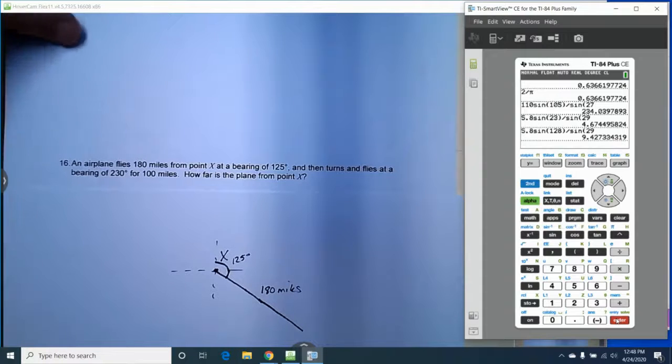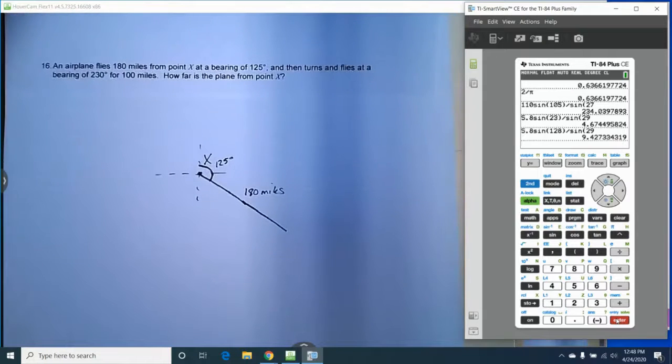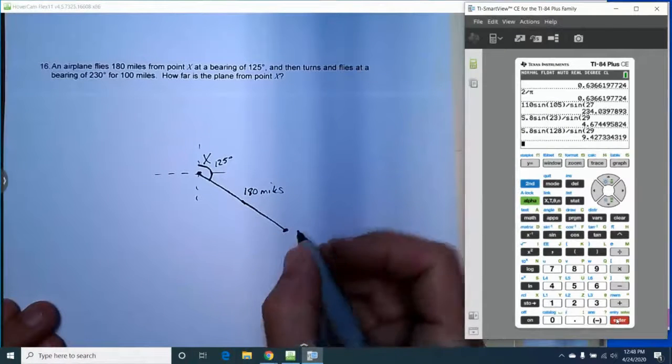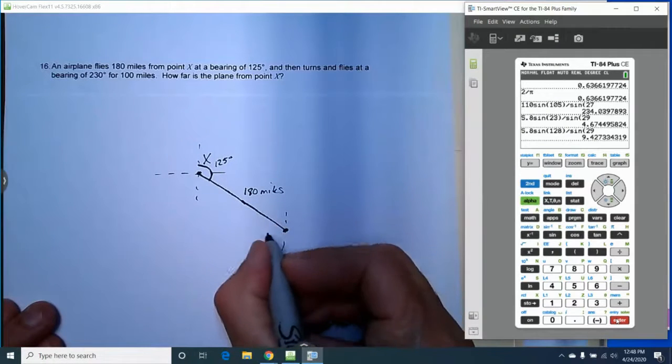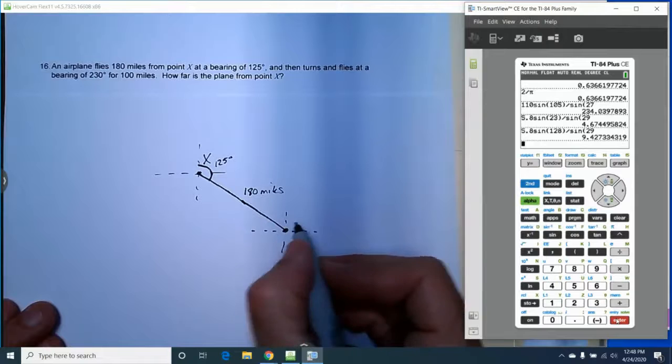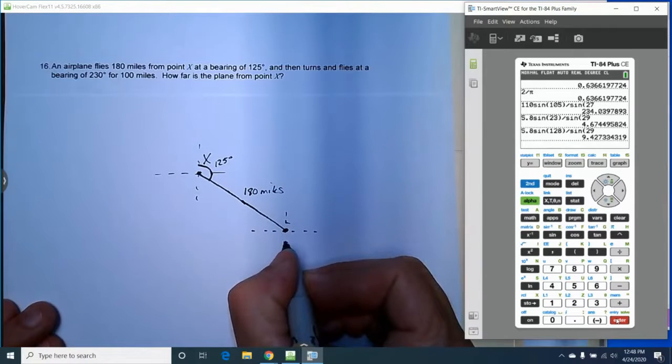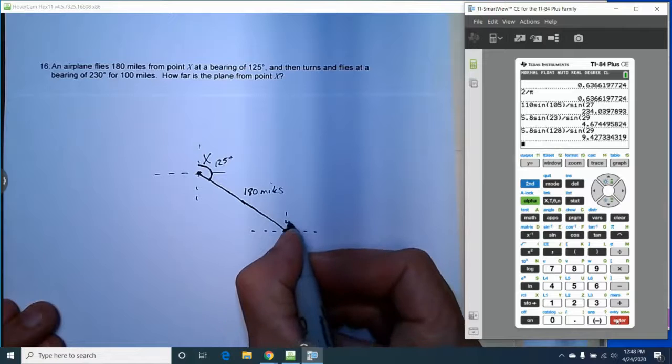And after that it turns and flies at a bearing of 230 degrees. So from this point we're going to redo the bearing so that it's 230. So from here down to here would be 180, so it's going to be another 50 degrees past that.